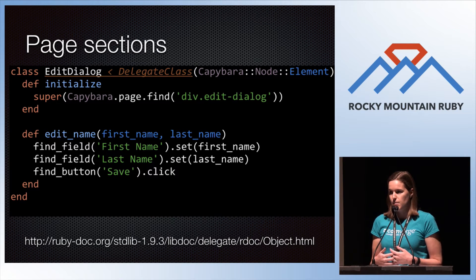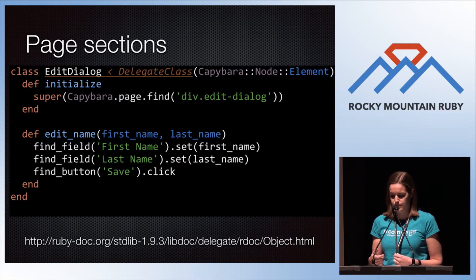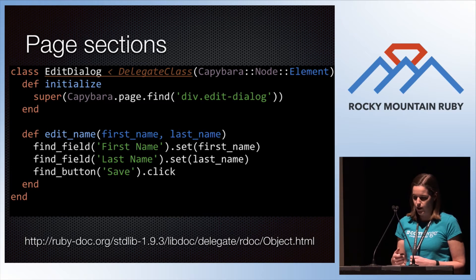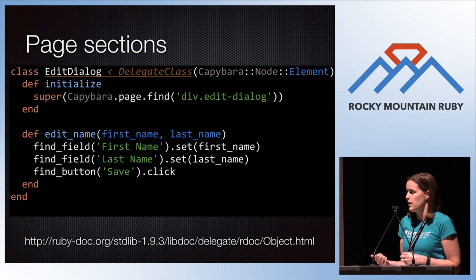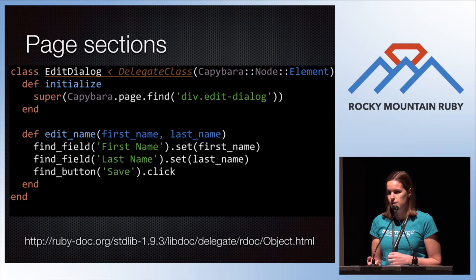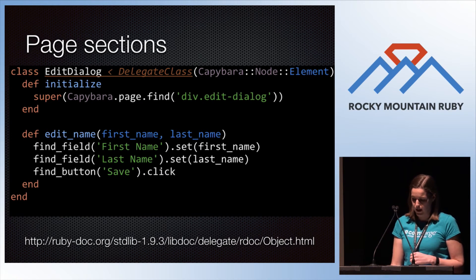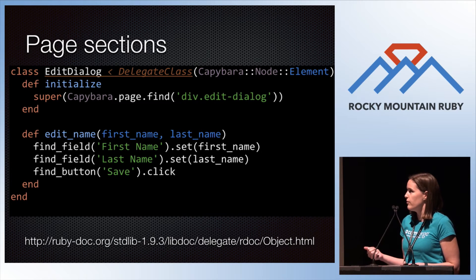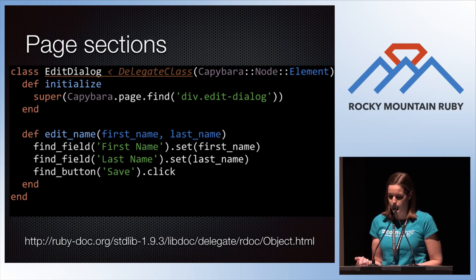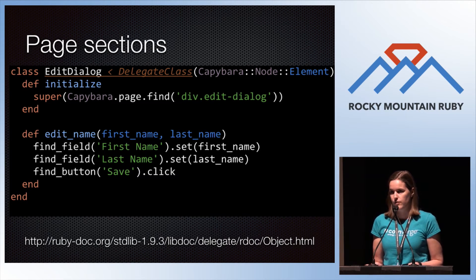Sometimes you might want to add custom methods to those sections once you find them with the finder method. Inheriting directly from element won't work in that case because the find method will give you an element instead of your new EditDialog class. A handy way to do this is with DelegateClass, that's in Ruby's standard library in Forwardable. It takes an instance of the class in initialize and delegates any undefined method to the class, but you can add additional methods to it. Here's the example for the edit dialog: delegate to Capybara element, use Capybara's finder in the initialize, and add an edit_name method that makes it easier to fill in that dialog.